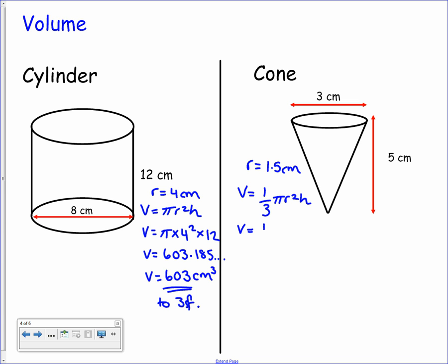Again plug it into the formula. So we have a third times pi times 1.5 squared times five. And following through this calculation your volume will come out to give you 11.7809 and so on.